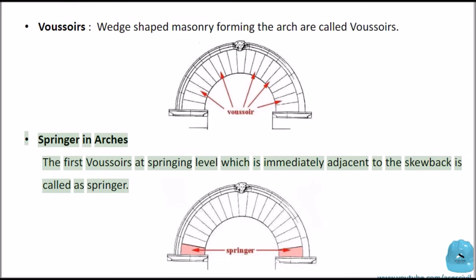Springer in arches: The first voussoirs at springing level which is immediately adjacent to the skew back is called a springer.